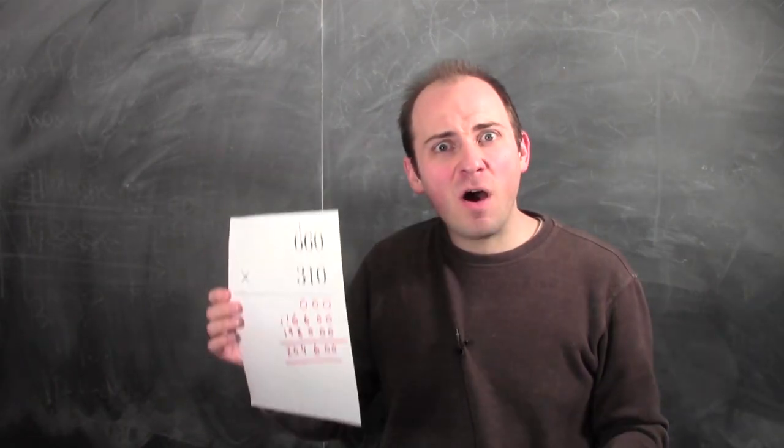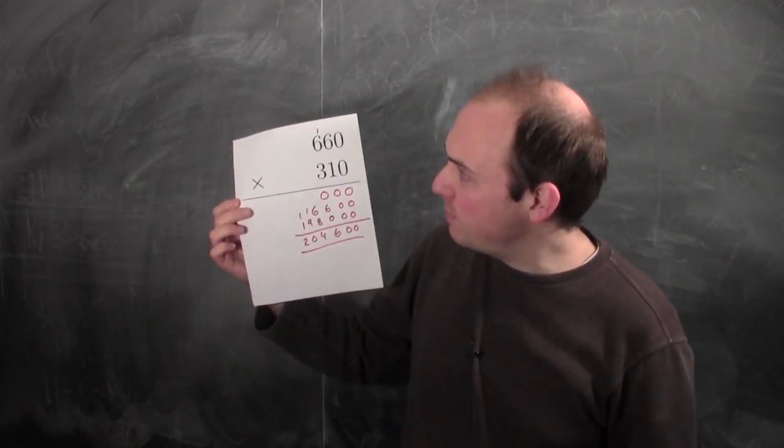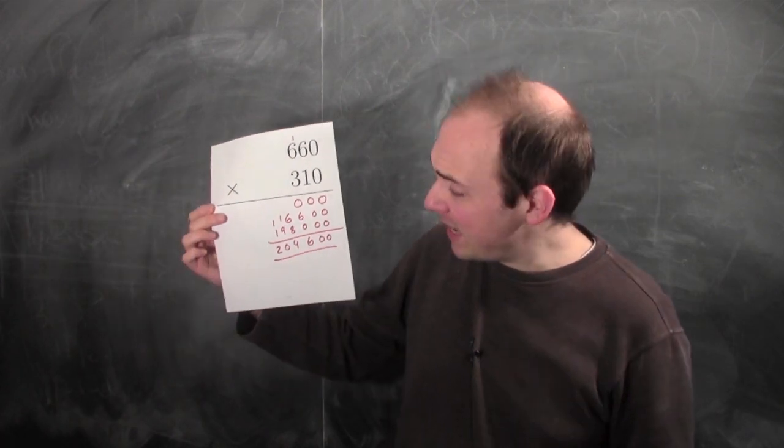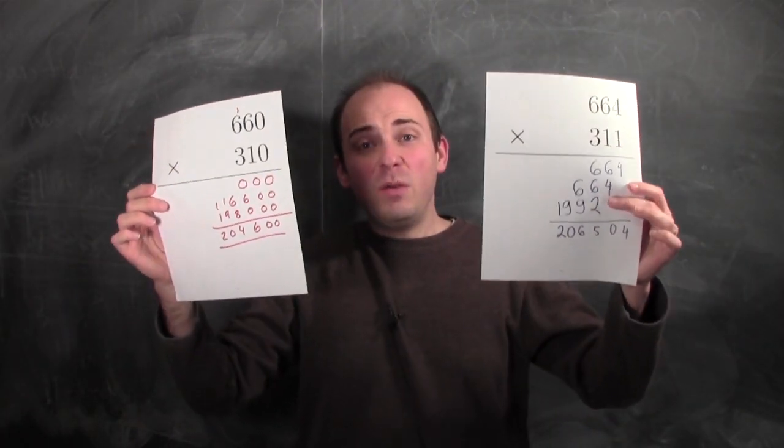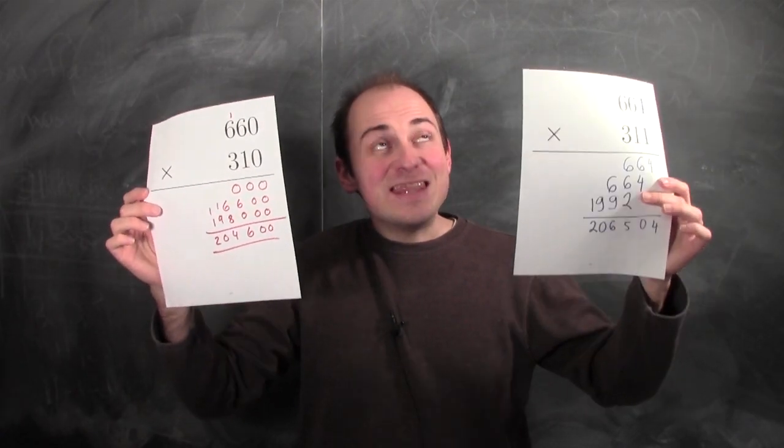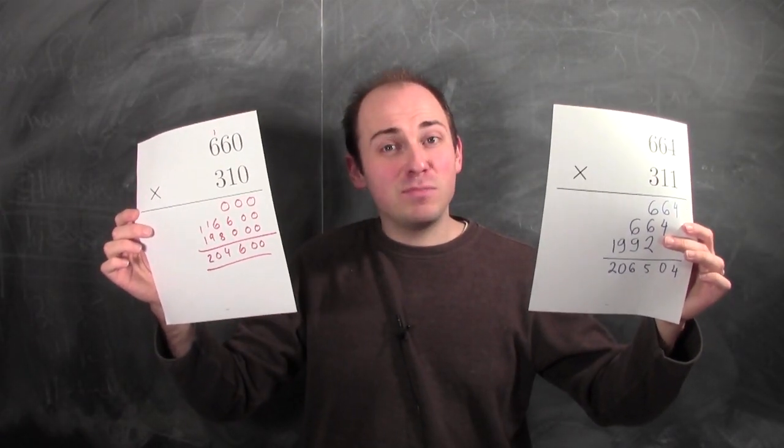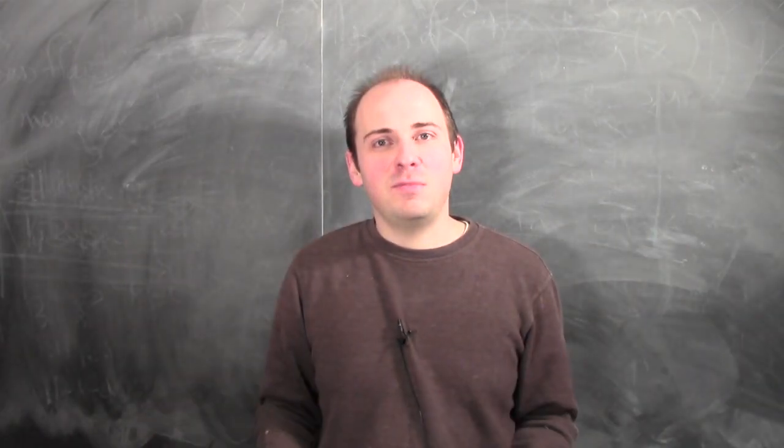which isn't so far off from the answer that Bart got when he multiplied 660 times 310 and got 204,600. So look at this: we've got two different problems. The inputs to these multiplication problems are similar, and the outputs are also similar.